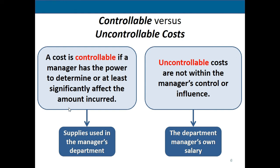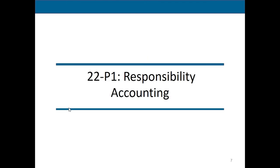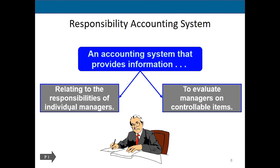Focused on performance evaluation, we need to understand controllable versus uncontrollable costs. A controllable cost is one the manager has the power to change or significantly affect, such as the supplies used in their department. An uncontrollable cost is one the manager has no control over — such as their own salary, the CEO's salary, or the janitorial cost allocated to their department. A manager should never be evaluated on uncontrollable costs, which brings us to the responsibility accounting side: an accounting system that evaluates managers on their controllable items only.